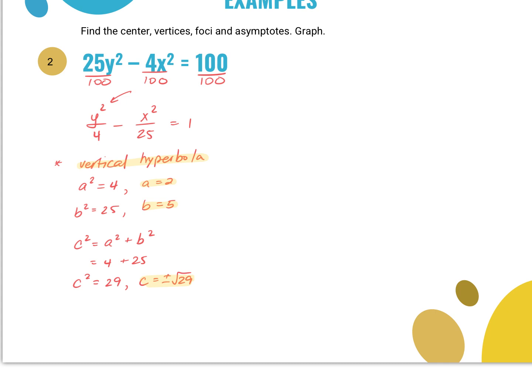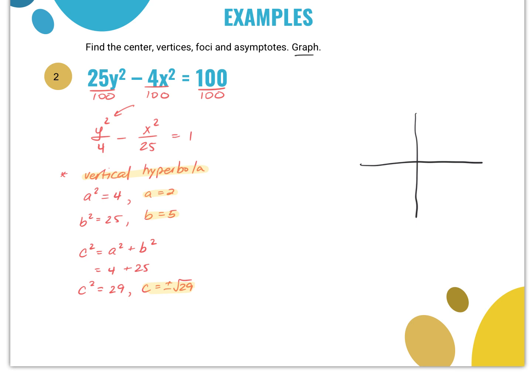I start graphing with center at 0,0. Since a = 2 and it's vertical, I go up 2 and down 2 units from center. So my vertices are at (0, 2) and (0, −2). The c value — the distance from center to foci — is √29, which is between 5 and 6. So the foci are at approximately (0, √29) and (0, −√29).